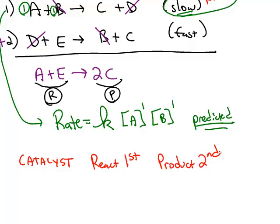In this example, B fits the definition of a catalyst. It was used up in step number one, but then it's regenerated in step number two. A catalyst is able to be used again and again and again because it's regenerated in that later step.